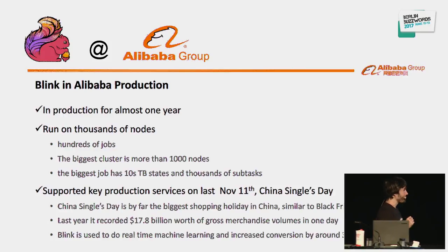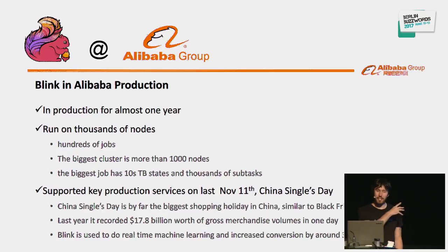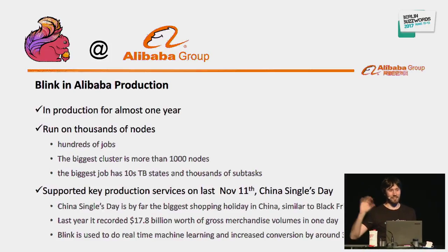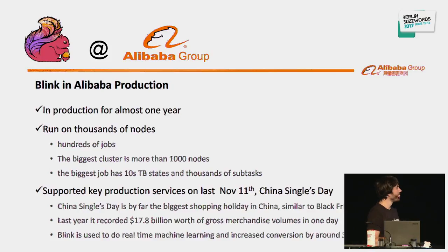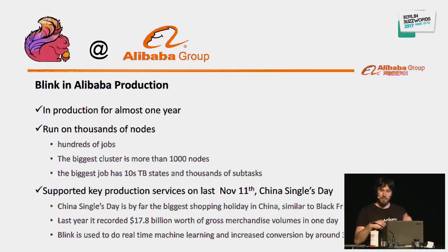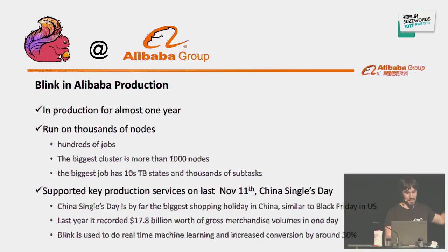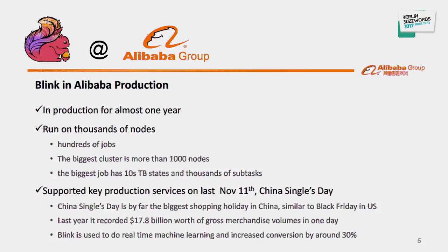The scale Alibaba runs on is probably even larger — single Flink jobs running on more than thousands of nodes with tens of terabytes of in-process state. One of the really cool things is that during Singles Day, the Chinese equivalent of Black Friday, the real-time search optimization to rank products based on trends is actually running on this stream computation system.